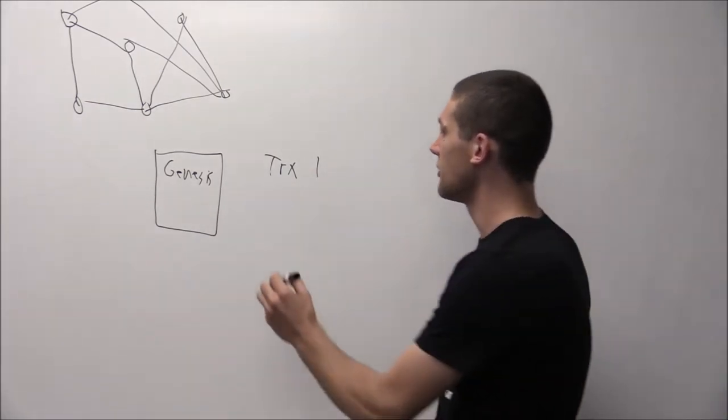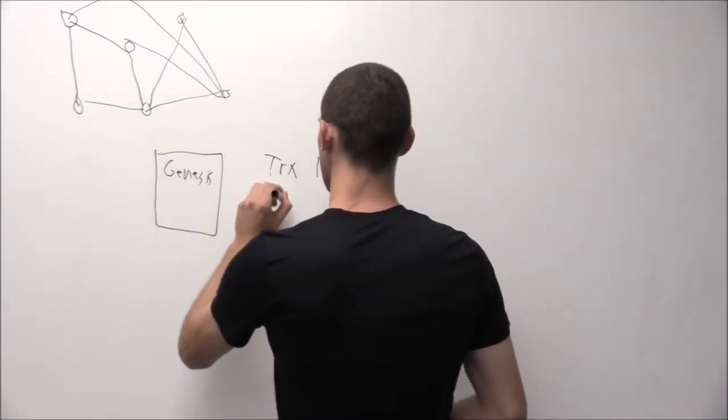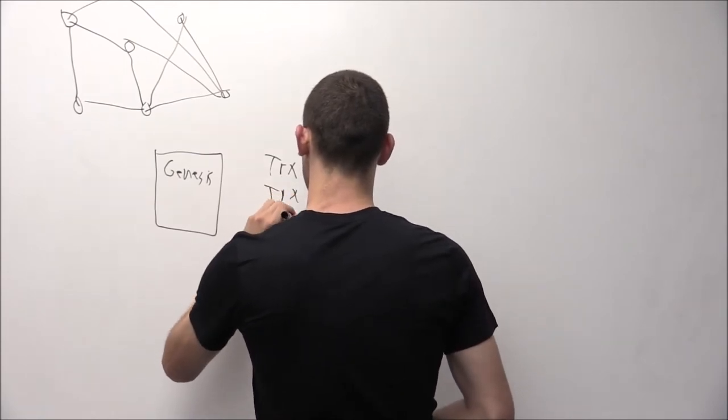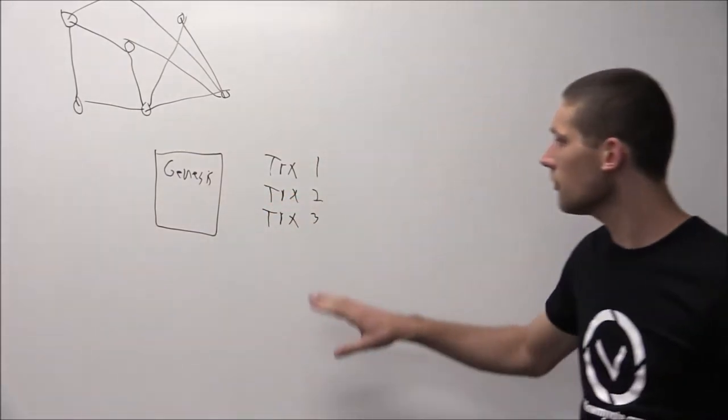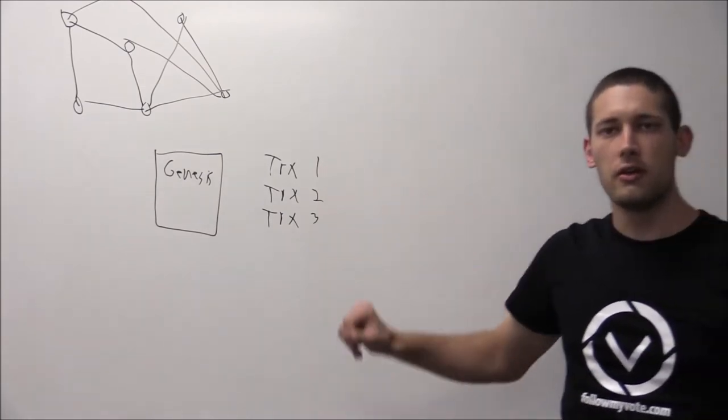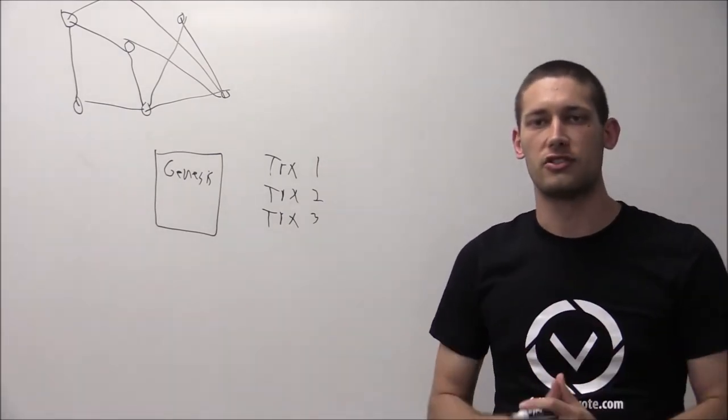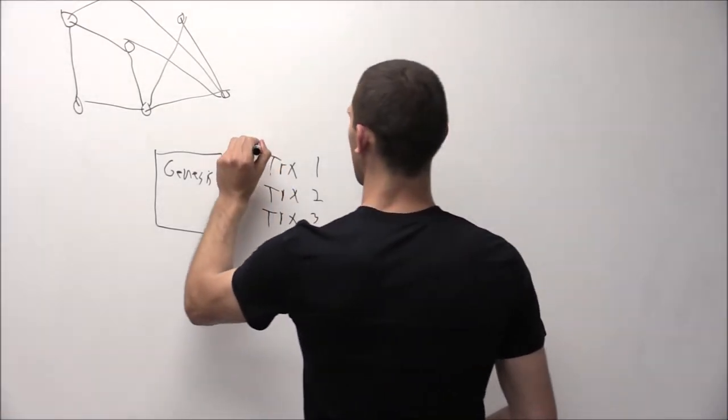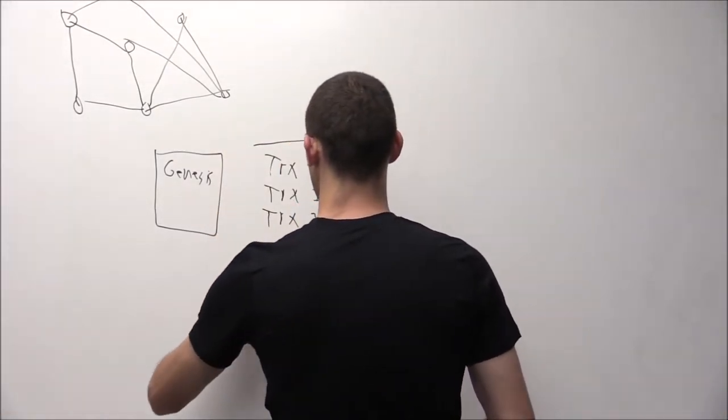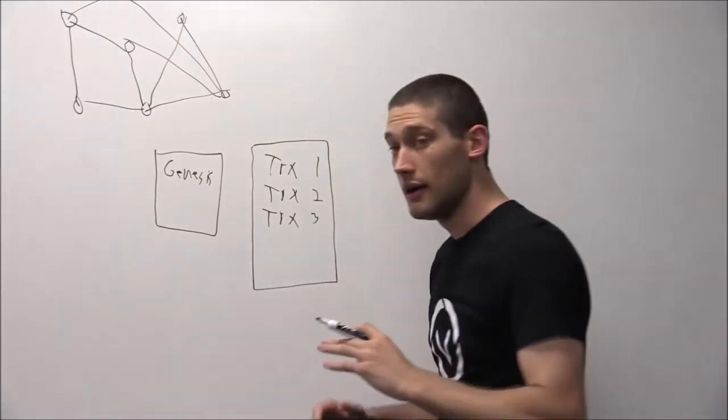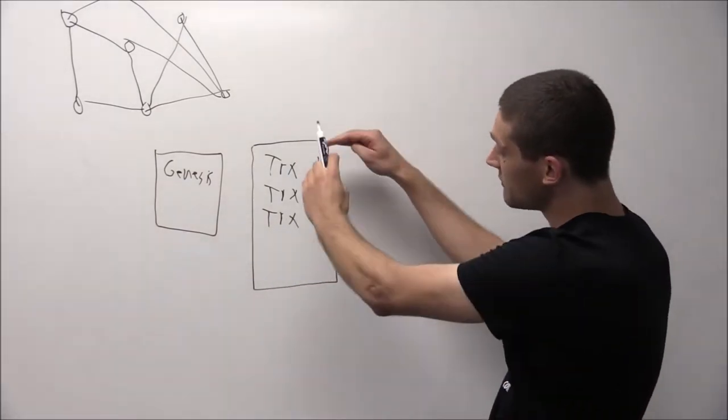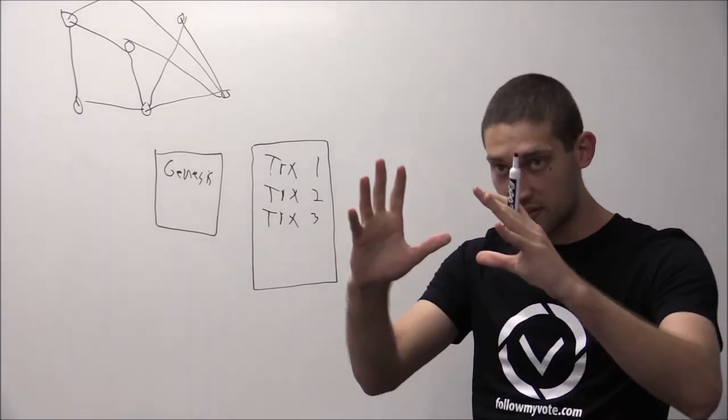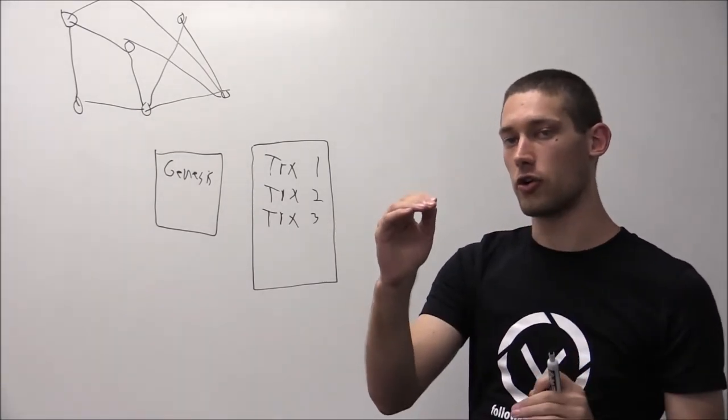As transactions accumulate in this pool we begin to create blocks of transactions. Now when a new block is added to the network, it groups transactions together. It establishes a consensus of the order in which the transactions occurred.